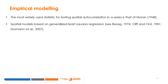The most widely used statistic for testing spatial autocorrelation in a series is that of Moran (1948). In practice, spatial models based on the generalized least squares estimator are used for the correction of spatial autocorrelation biases.